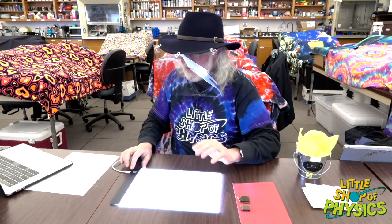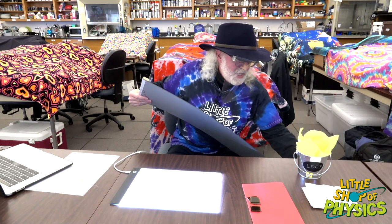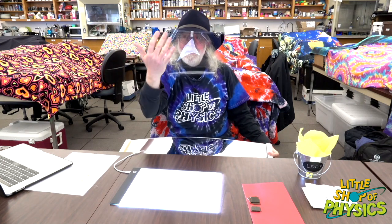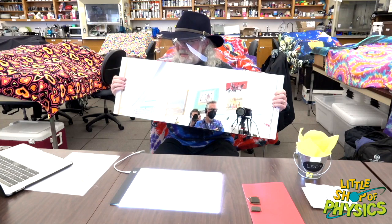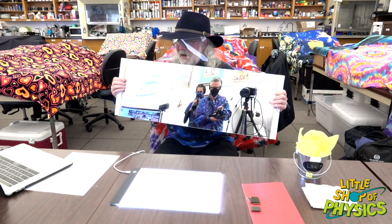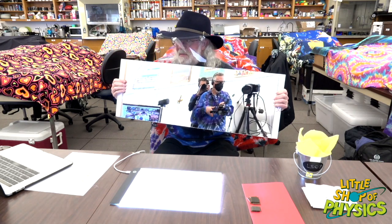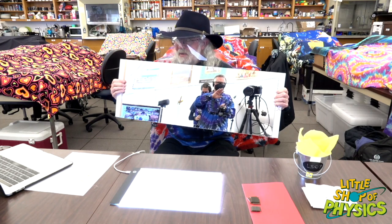Now we're going to talk about bouncing light. The way we bounce light is with mirrors. I have a mirror here. Patrick and Adam are over there, and I can see them because light from them comes towards me. But if I take this mirror and put it here, now we can see Patrick and Adam because I'm taking the light from them and bouncing it toward the camera. So with polarization we're twisting light, and with mirrors we're bouncing light.